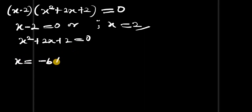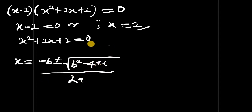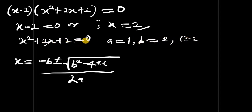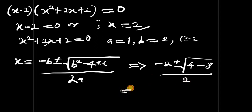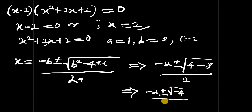Using the quadratic formula: x equals negative b plus or minus square root of b squared minus 4ac, all divided by 2a. Here a equals 1, b equals 2, and c equals 2. Substituting: x equals negative 2 plus or minus square root of 4 minus 4 times 1 times 2, divided by 2 times 1. That gives negative 2 plus or minus square root of negative 4, divided by 2.